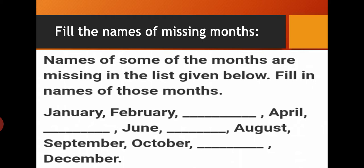June is given. After June: July, August, September, October. After October, yes it is November, and then December. So you have to write down the names of those missing months in the blanks.